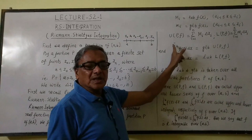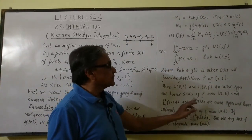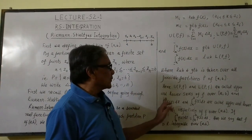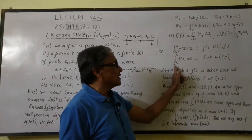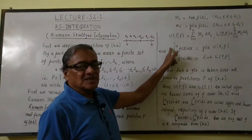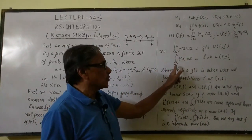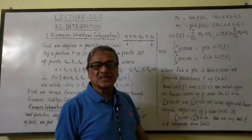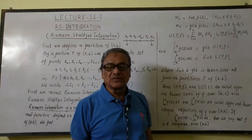Integral a to b upper bar f(x) dx and integral a to b lower bar f(x) dx—these are called upper integral and lower integral of the function f over interval [a,b].